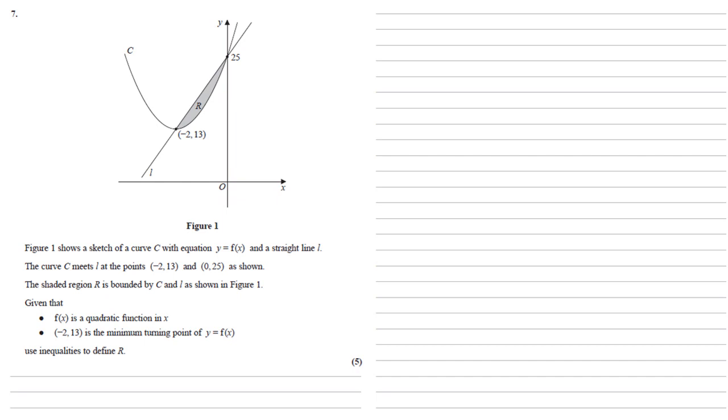We need to use inequalities to define R. So firstly let's find the equation of the straight line. We're going to do this by finding the gradient first. So our equation for the gradient is m equals y1 minus y2 over x1 minus x2, where x1, y1 and x2, y2 are points on the line. Well we know it goes through 0, 25 where it cuts the y-axis and it goes through minus 2, 13.